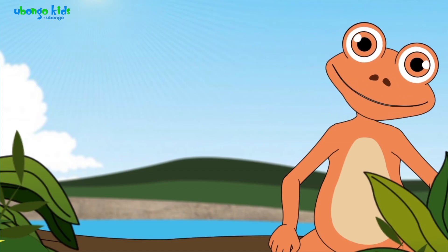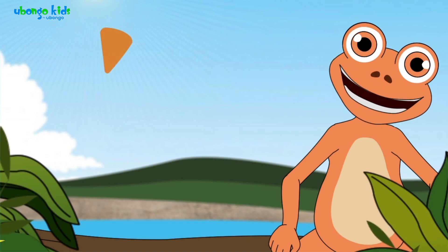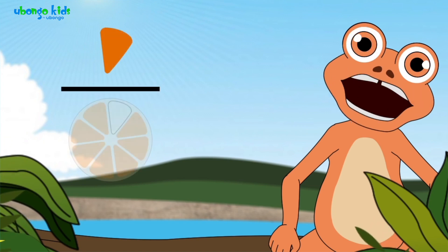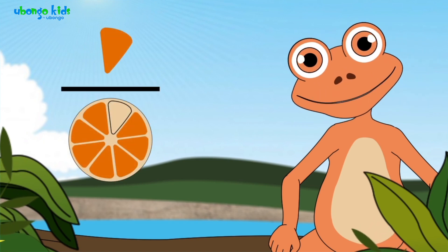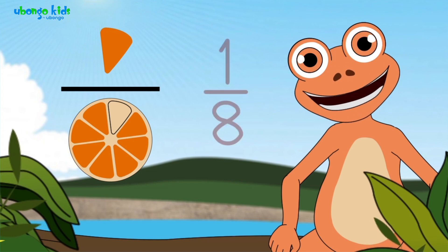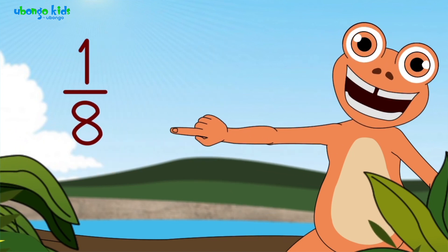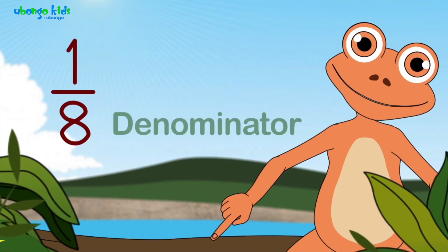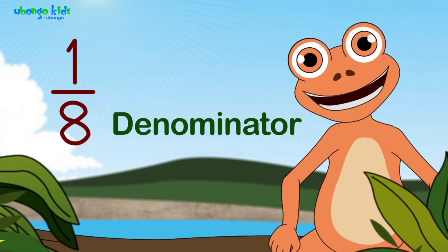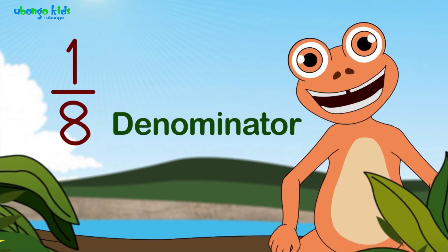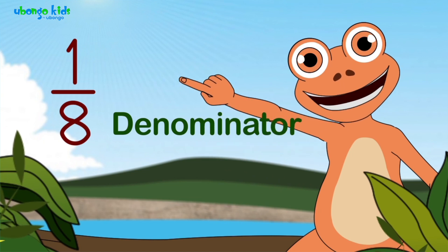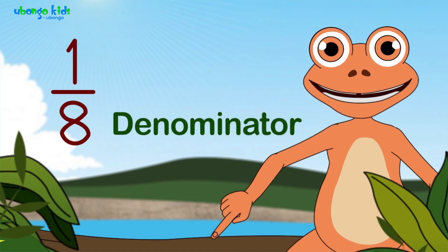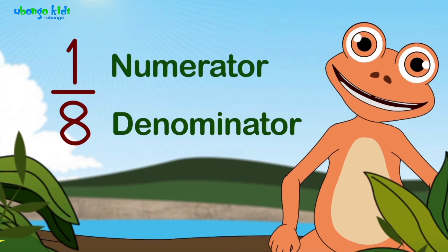You ate one piece out of eight total pieces. That is one eighth. Look here at the denominator — it is eight, the total number of pieces in a whole. You ate one, so that is the numerator.